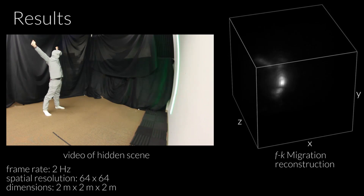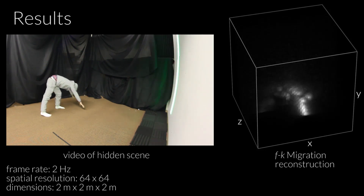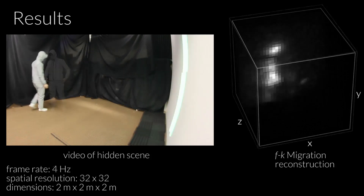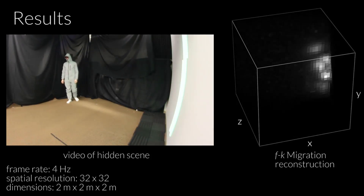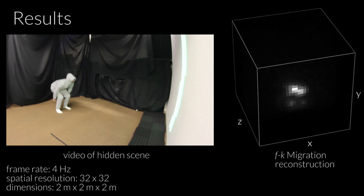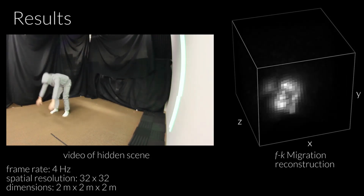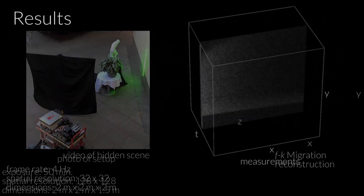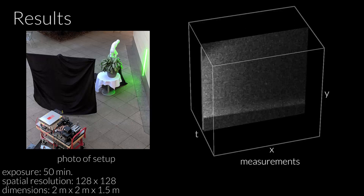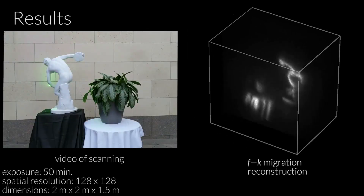Here, the actor is dressed in a retro-reflective suit to increase the amount of available signal. Note that the position and pose of the actor can be readily recognized in the reconstruction. An outdoor scene consists of a statue and a plant on top of a table with a white tablecloth. We capture this scene for 50 minutes under indirect sunlight during twilight and reconstruct the 3D geometry.